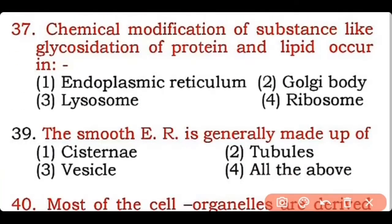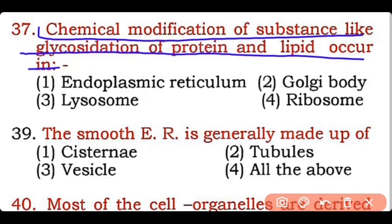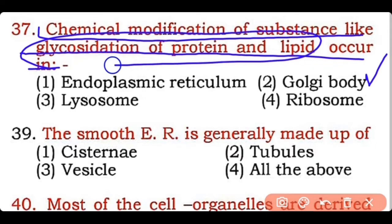Question 37: Chemical modification of substances like glycosylation of protein and lipid occurs in — endoplasmic reticulum, Golgi body, lysosome, or ribosome? Correct answer is option two — glycosylation of protein and lipid occurs in the Golgi apparatus.